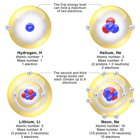Neutrons bind with protons and one another in the nucleus via the nuclear force, effectively moderating the repulsive forces between the protons and stabilizing the nucleus. Outside the nucleus, free neutrons are unstable and have a mean lifetime of 881.5 ± 1.5 s, about 14 minutes 42 seconds; therefore the half-life for this process is 611.0 ± 1.0 s, about 10 minutes 11 seconds.